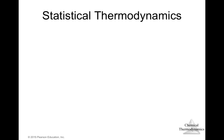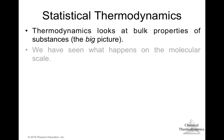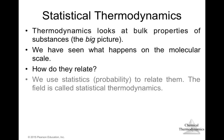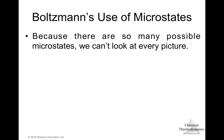Statistical thermodynamics looks at bulk properties of substances — the big picture — while also relating them to what happens on the molecular scale. We saw the probabilities and microstates available when a gas expands. Statistics and probability are used to relate the two. A microstate is a single possible arrangement of the positions and kinetic energies of molecules. Boltzmann used these microstates, representing their total number as W (capital W, different from lowercase w for work).